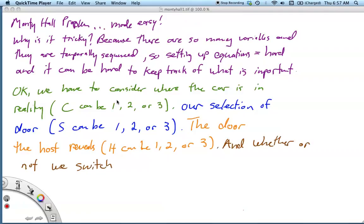We have to consider where the car is in reality, which is a random variable that we'll call C. It can take on values one, two, or three. We have to consider our selection of the door, S we could select one, two, or three. The door that the host reveals, which we'll call H, and that can be one, two, or three. But as we know it's going to depend on what's already happened.